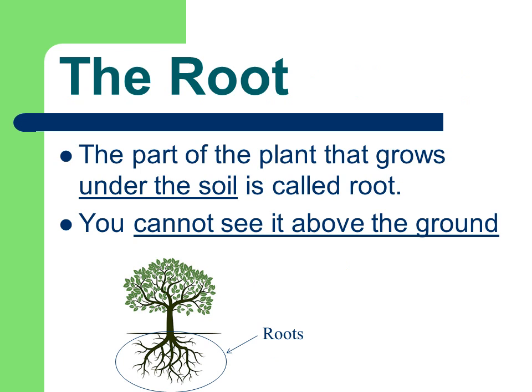First, the root. The part of the plant that grows under the soil is called the root. You cannot see it above the ground. In the diagram you can see there is a tree and below the ground you can see there are roots. When you see the plant from above you don't see the roots. So the part of the plant that grows under the soil is called the root.